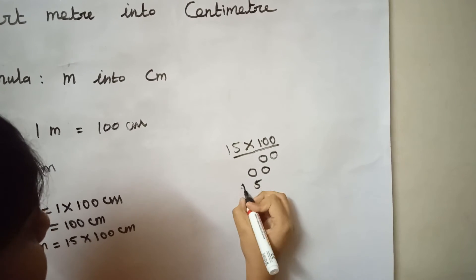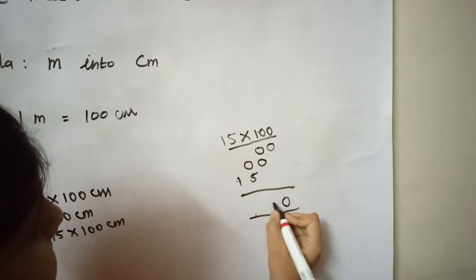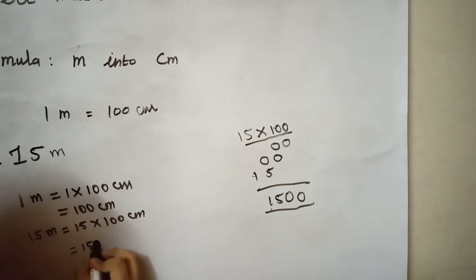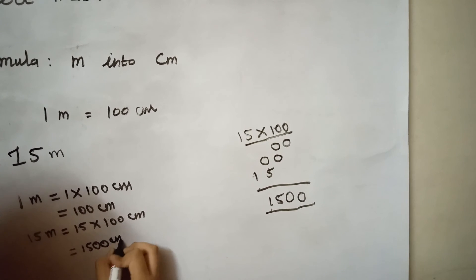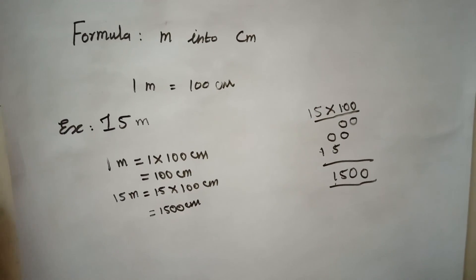So now our answer is 1500 centimeters for 15 meters. Hope you guys all understood this converting meters into centimeters.